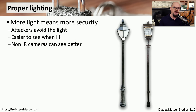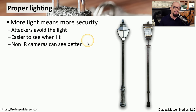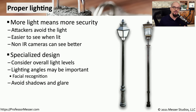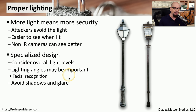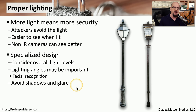Providing proper lighting is one of the best security controls you can have, especially in environments that need to be monitored 24 hours a day. Attackers avoid any place that may be lit because they don't want to be seen, and it's easier to see who might be in a particular area with plenty of lighting. If you're using cameras that don't use infrared, you'll want as much lighting as possible to get the best possible picture. You also have to think about lighting angles, especially if there are shadows and you're doing some type of facial recognition, to avoid shadows and glare for the best possible image.